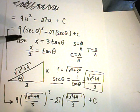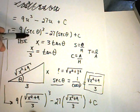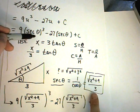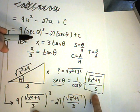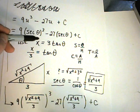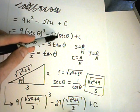Now all I have to do is plug in secant theta. So secant theta is the square root of x squared plus 9, over 3, cubed. Then I'm plugging it in on the other part as well.